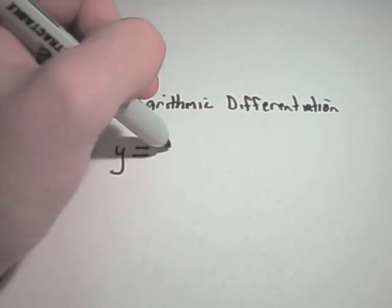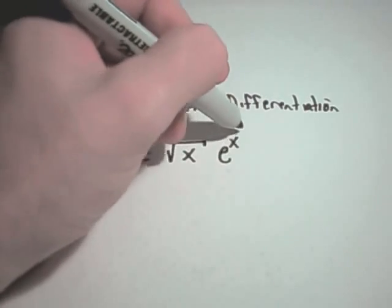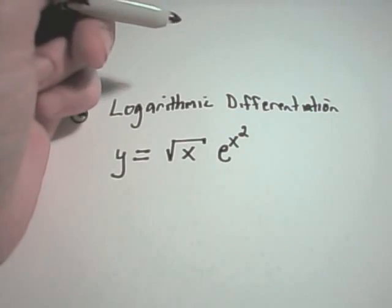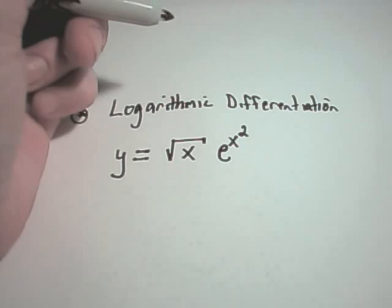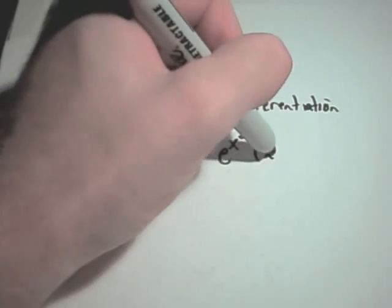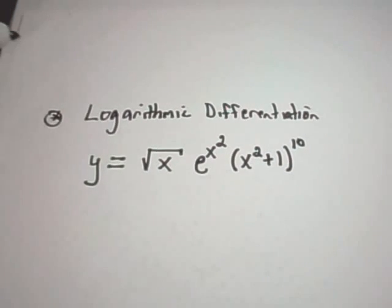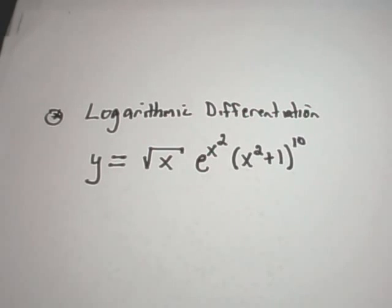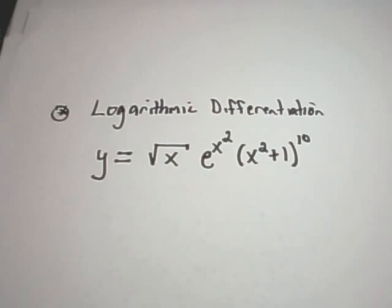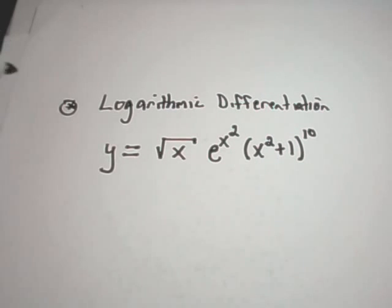Let's look at a problem where it's not necessary to use logarithmic differentiation, but it does make things a little bit easier. Suppose I had to take the derivative of this function: the square root of x times e to the x squared times x squared plus one to the tenth. I could use the product rule a few times and simplify things down.